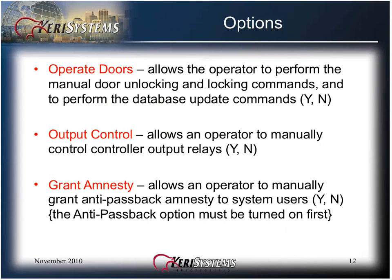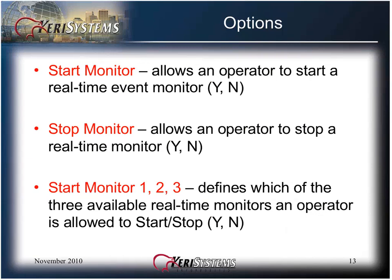Operate Doors allows the operator to perform the manual door unlocking and locking commands, and to perform the database update commands. Output Control allows an operator to manually control controller output relays. Grant Amnesty allows an operator to manually grant anti-passback amnesty to system users. The anti-passback option must be turned on first, and anti-passback is taught in its own separate KTI module. The Start Monitor option allows an operator to start a real-time event monitor, and Stop Monitor allows an operator to stop a real-time monitor. Start Monitor 1, 2, and 3 defines which of the three available real-time monitors an operator is allowed to start or stop.